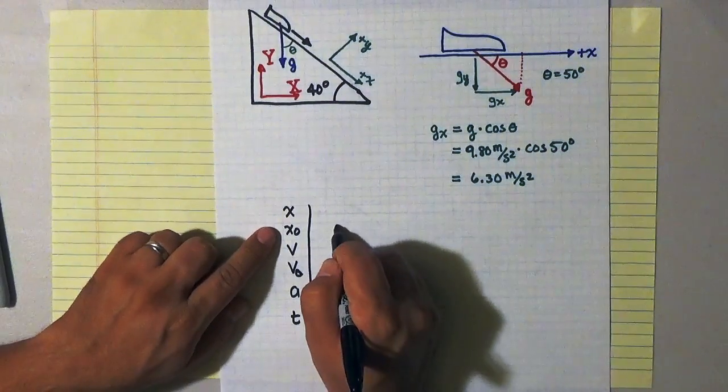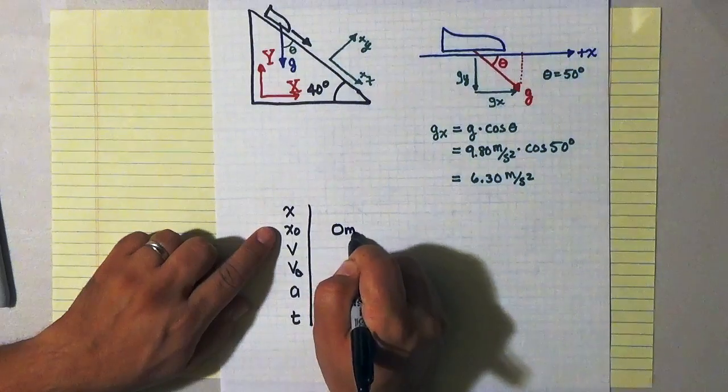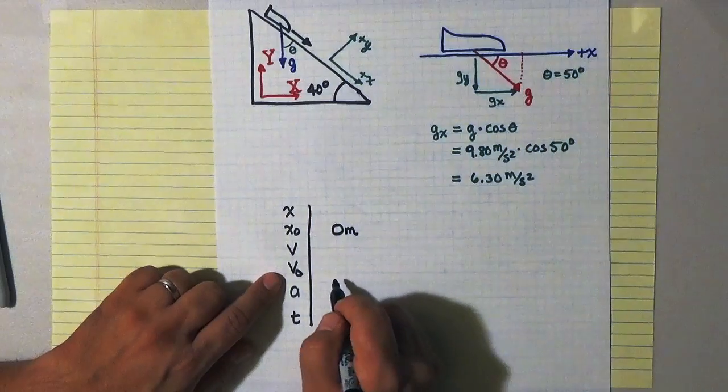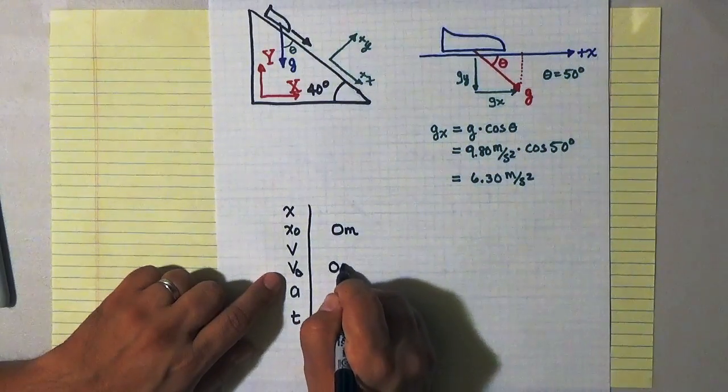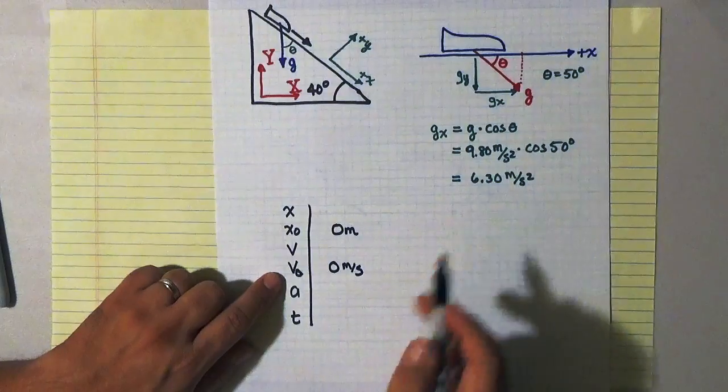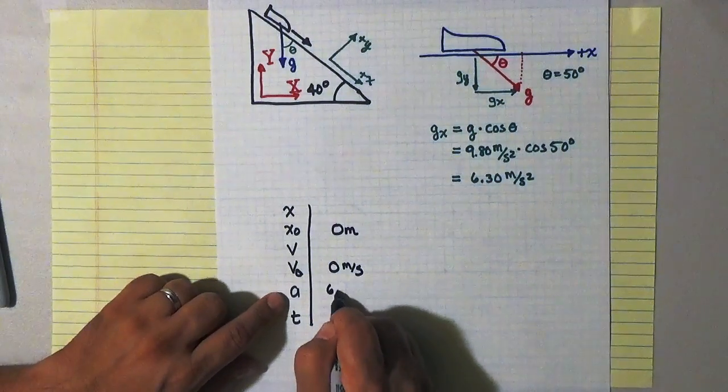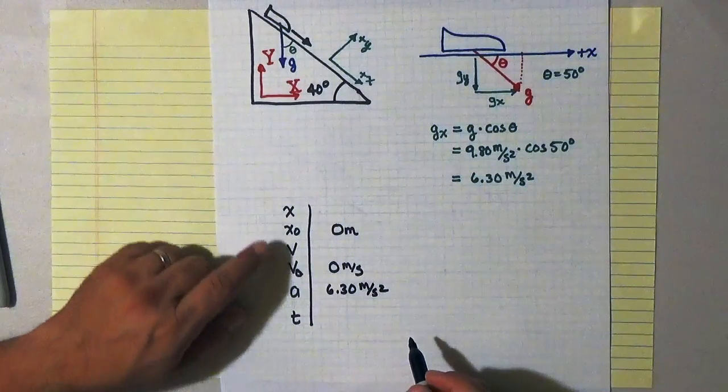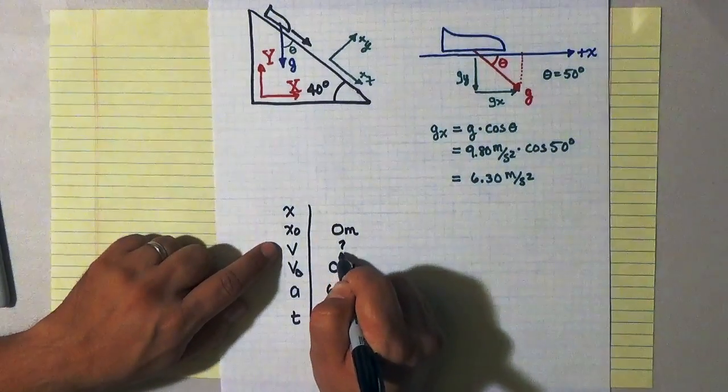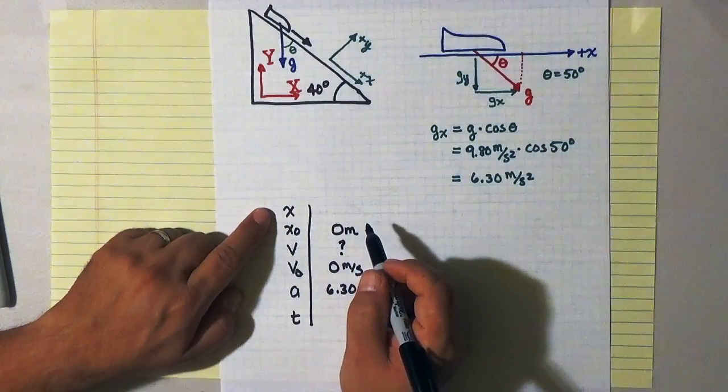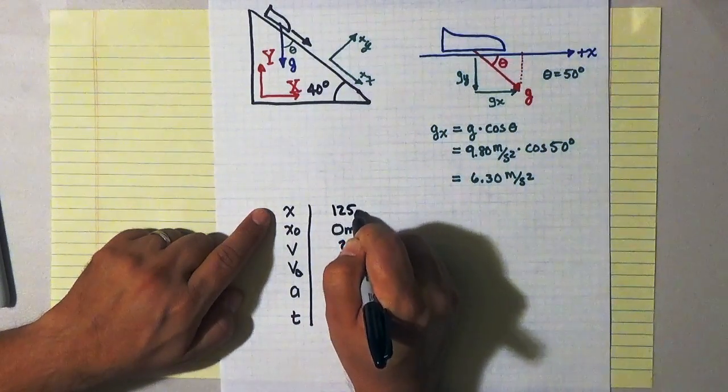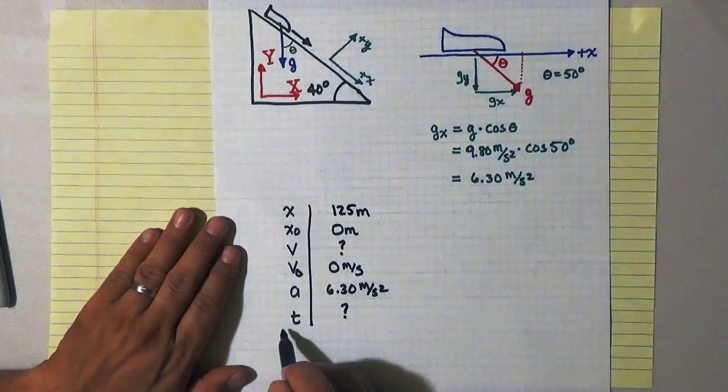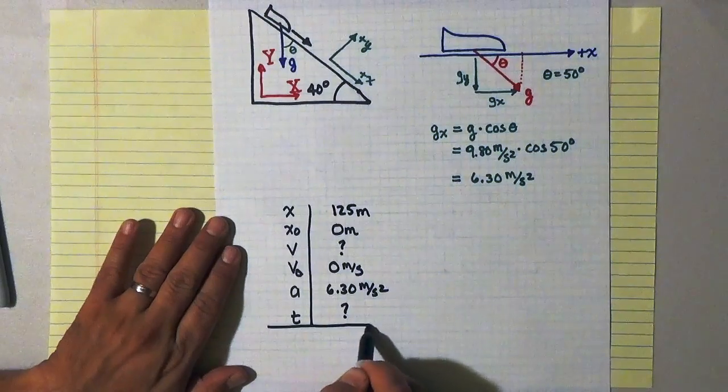I'm allowed to choose my origin of coordinates. So I'm going to choose that my initial position is 0 meters at the top of the slope. I'm told that I start from rest. So my initial speed is 0 meters per second. I just computed that my acceleration is 6.30 meters per second per second. I have no idea what my final speed is. I know that the length of the run is 125 meters. And I have no idea how long it takes me to get to the bottom of the run.